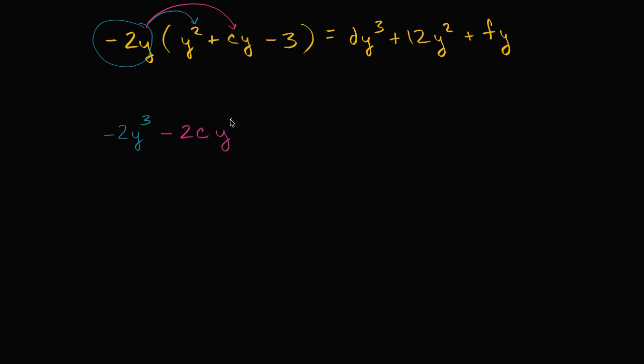And then we would multiply the negative two y times, we gotta keep in mind, we're subtracting three here. So we could view that as a negative three. Negative two y times negative three. Negative two times negative three is positive six. And we still have that y over there. So there you have it. We have simplified the left hand side of this equation.